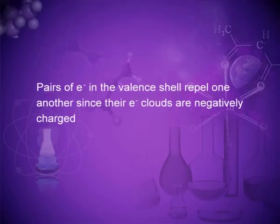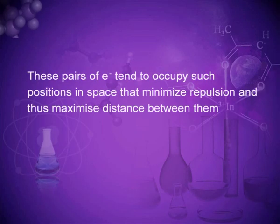The pairs of electrons in the valence shell repel one another since their electron clouds are negatively charged — there is a repulsion between all these electron pairs. These pairs of electrons tend to occupy positions in space that minimize repulsions and thus maximize the distance between them. The tendency is to enter the most stable position, that is, minimum repulsion and maximum distances.